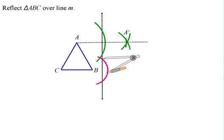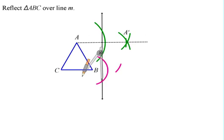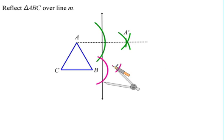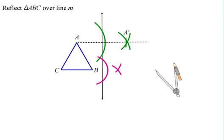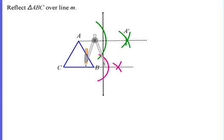From the points of intersection, we're going to create a smaller arc using the same setting. You're going to do another arc that intersects the one you just did, and then connect B through this new point that you've created — this will be your perpendicular. The last step is just to measure how far B is from the line of reflection so that you can find B' on the other side.